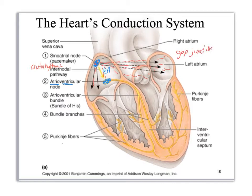So if the SA node depolarizes, it's going to send a signal across the atria and down the atria — only the atria at this point in time — through gap junctions. This allows the atria to contract as a single unit. The signal also goes to the AV node where it's picked up, then transmitted to the bundle of His or atrioventricular bundle, which splits it into right and left bundle branches. The bundle branches have little terminal fibers called Purkinje fibers.